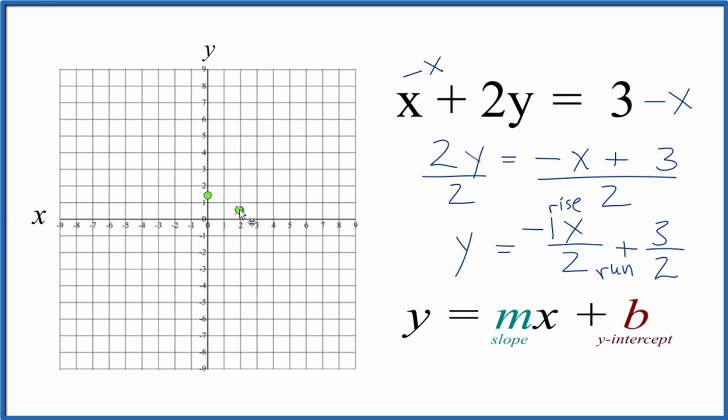Let's do it again from this point here. We rise negative 1, so we go down 1, and then we run 1, 2 to the right. You can see we have a line here. Let's put a line through it.